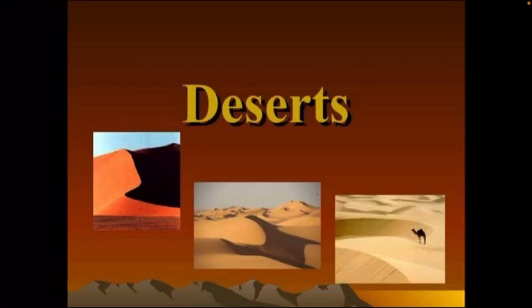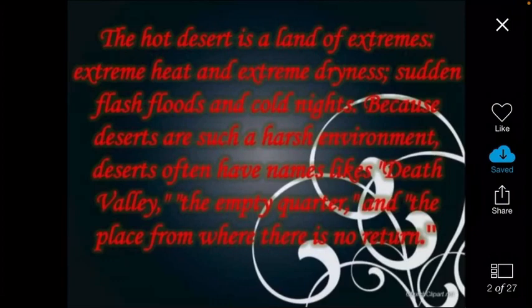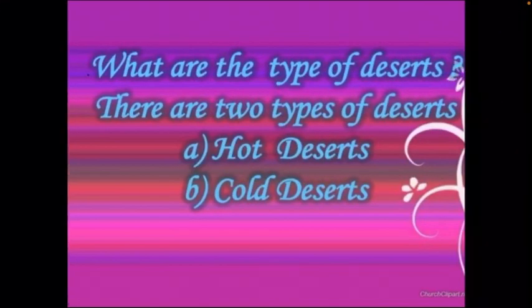A desert may be defined as a region which generally receives less than 25 centimetres of rainfall in a year. There are two types of deserts: cold desert and hot desert. First we are going to study about the hot desert. A hot desert is a place with very high temperature, where vegetation is sparse.